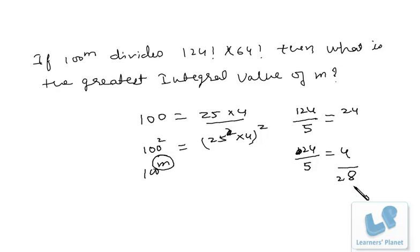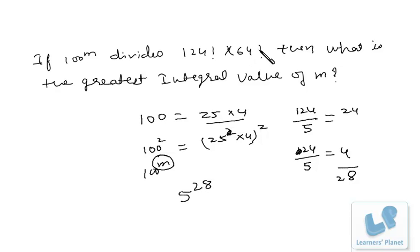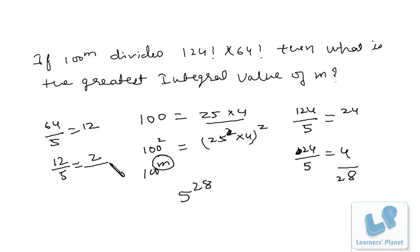So we are getting 28, which means if we expand 124 factorial and factorize it into prime factors, we get 5 raised to 28. Similarly, we find the highest power of 5 in 64 factorial: 64 divided by 5 gives 12, and 12 divided by 5 gives 2, so in all it is 14. Therefore this expression is divisible by 5 raised to 28 times 5 raised to 14.